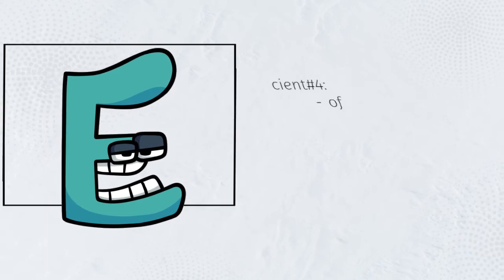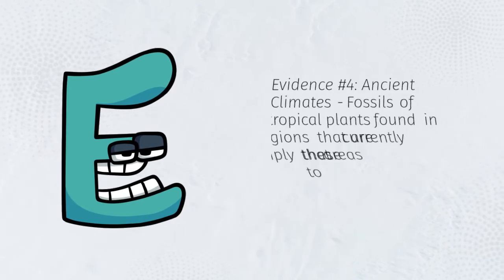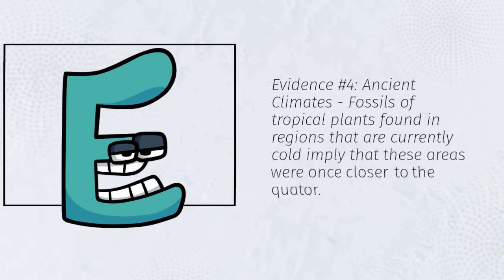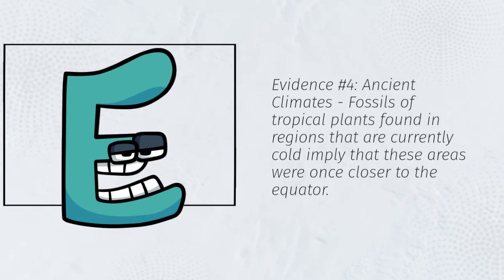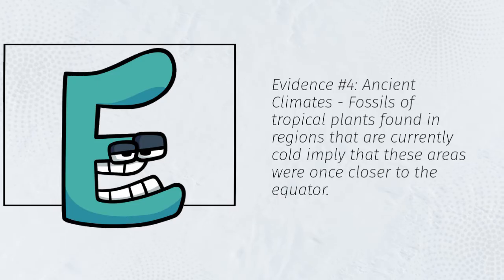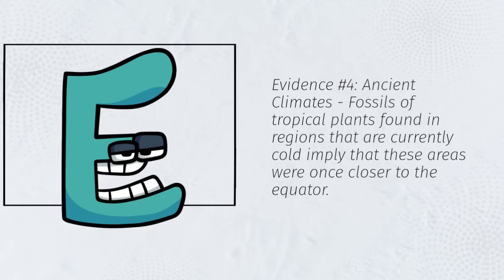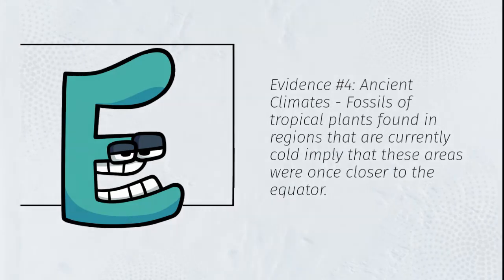Evidence number four: Ancient climates. Fossils of tropical plants found in regions that are currently cold imply that these areas were once closer to the equator.